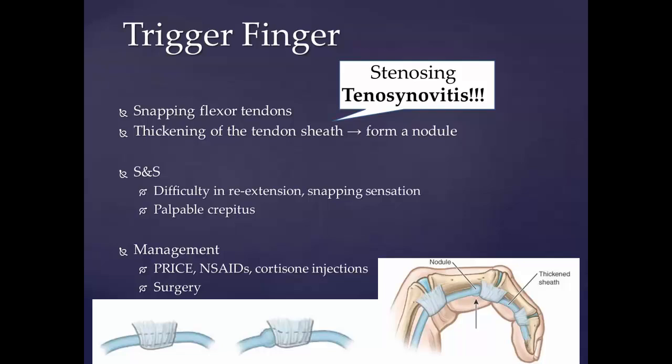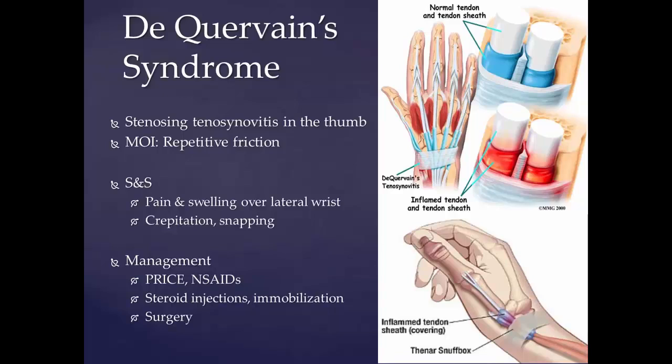Injection of the tendon sheath with a corticosteroid is effective over weeks to months in more than half of patients. When corticosteroid injections fail, the problem is resolved by a simple surgical procedure in which the surgeon cuts the sheath restricting the tendon. De Quervain syndrome is also known as blackberry thumb or texting thumb. It is an inflammation of the sheath or tunnel that surrounds the two tendons controlling movements of the thumb.